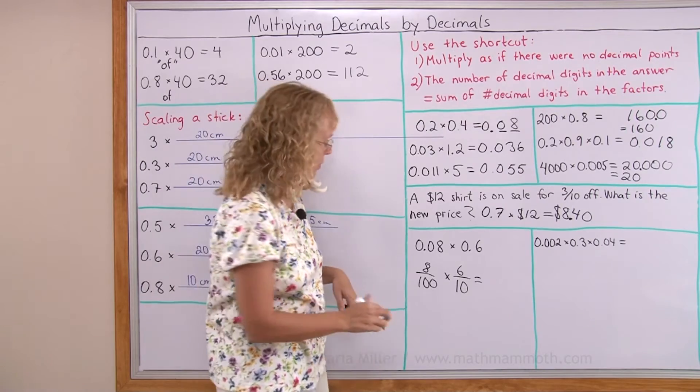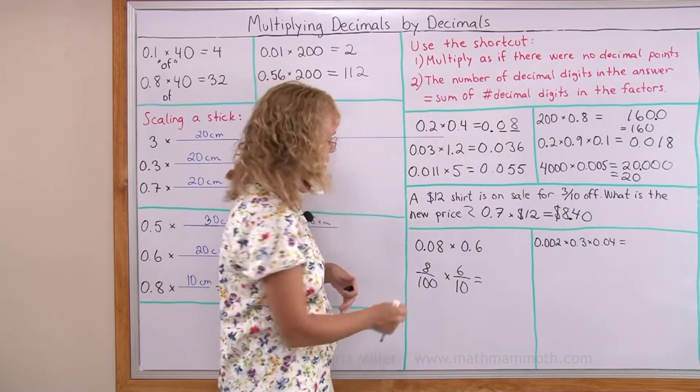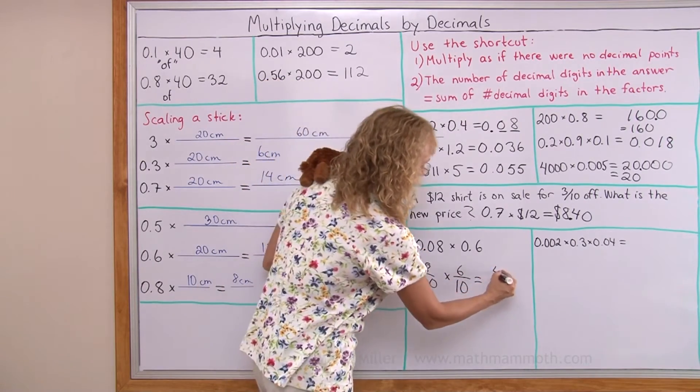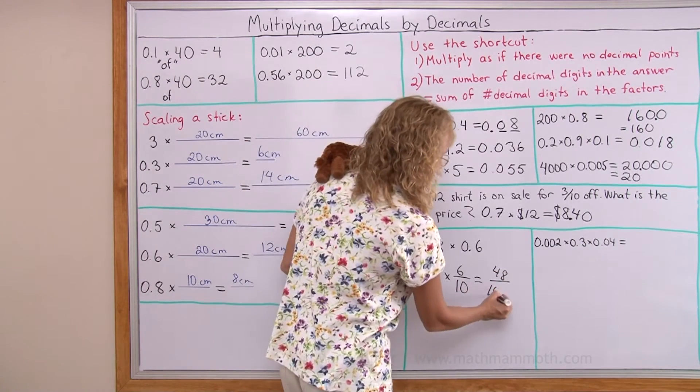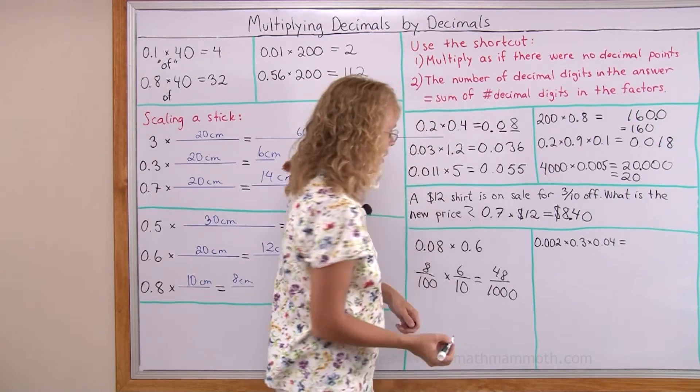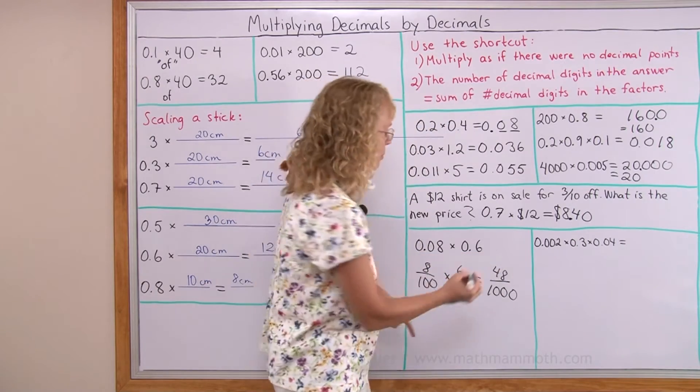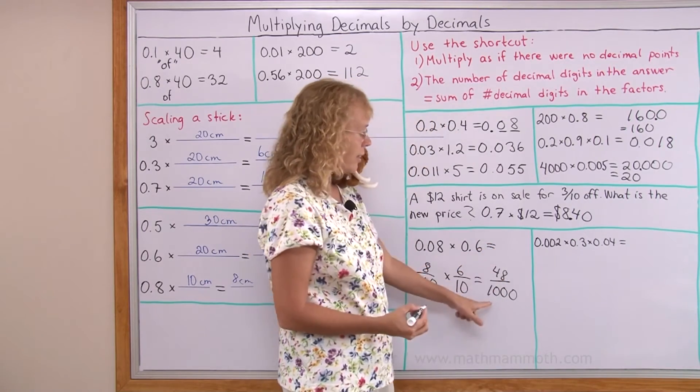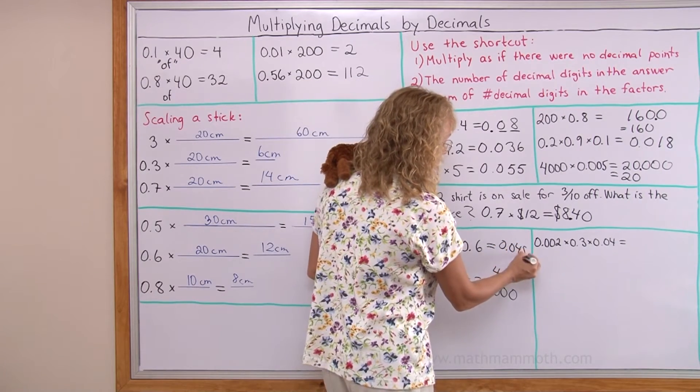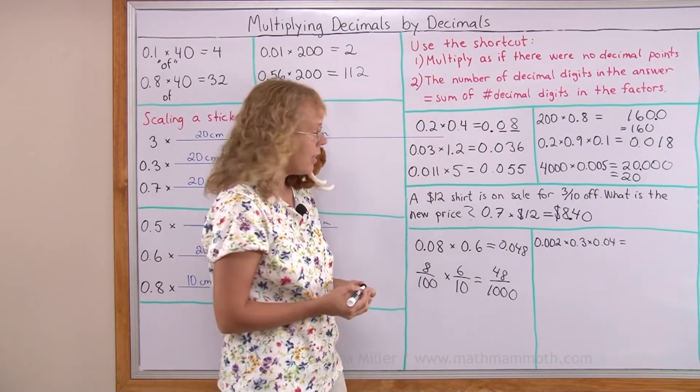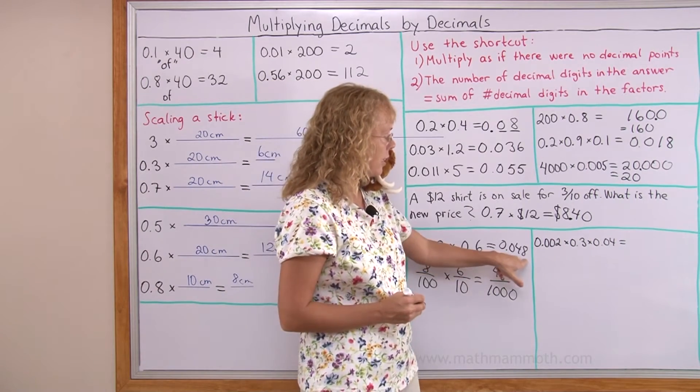But if you already know how to multiply fractions, you go eight times six equals forty-eight. And then you multiply the bottom numbers and you get thousand. Okay. And now I go from this to the decimal. Forty-eight thousandths as a decimal is, of course, this here. Zero point zero four eight. So this one has three decimals.